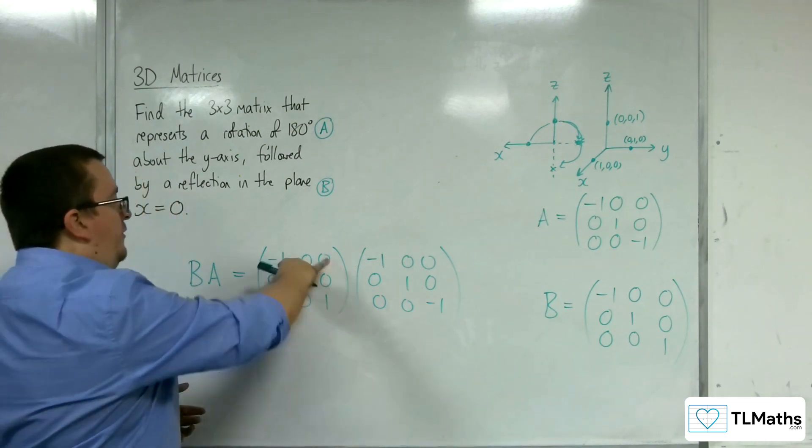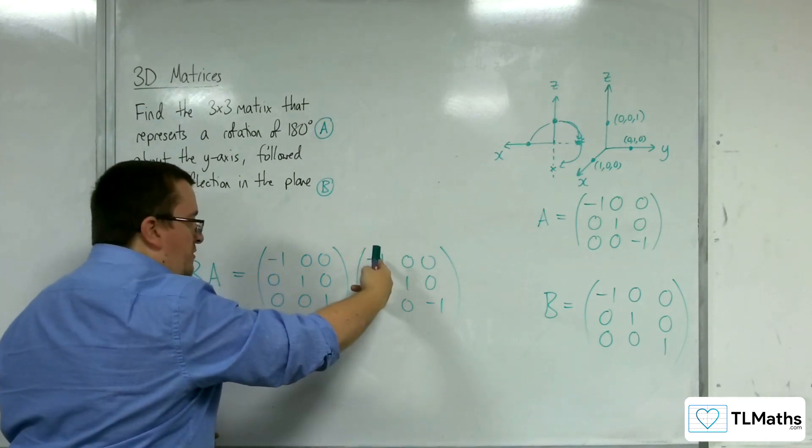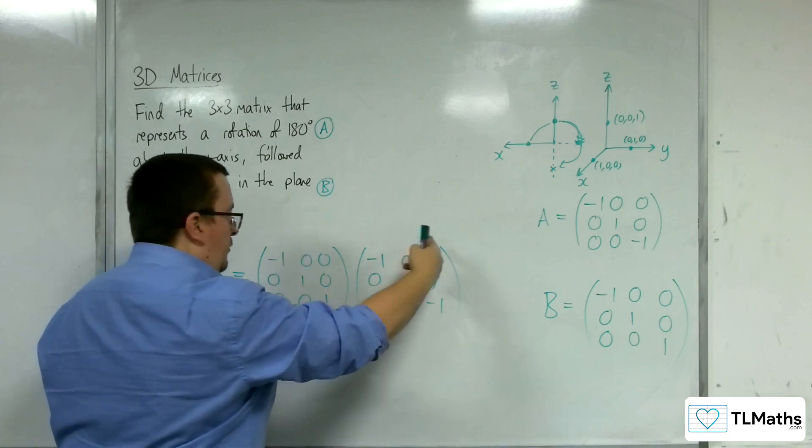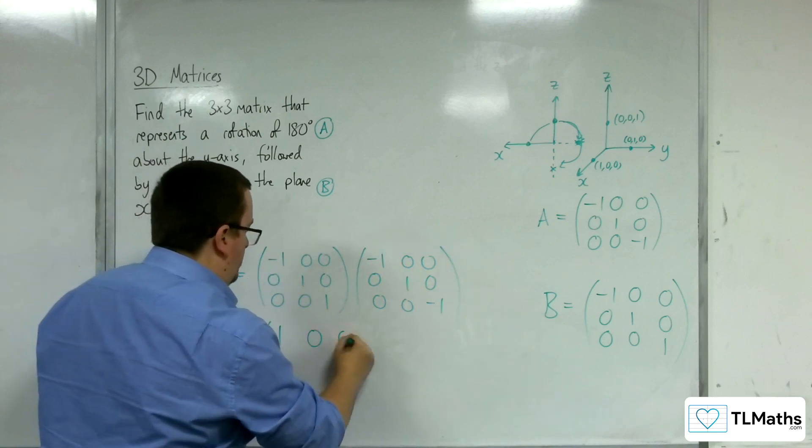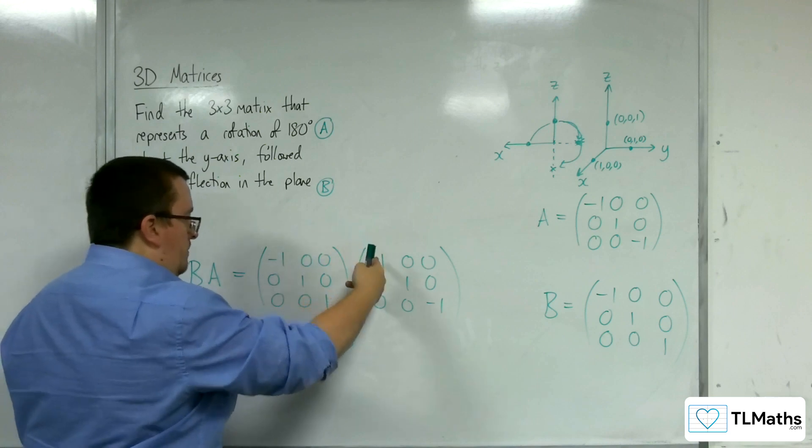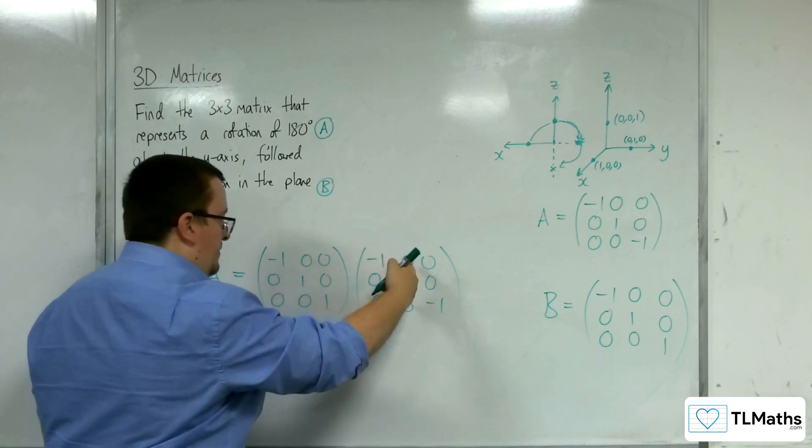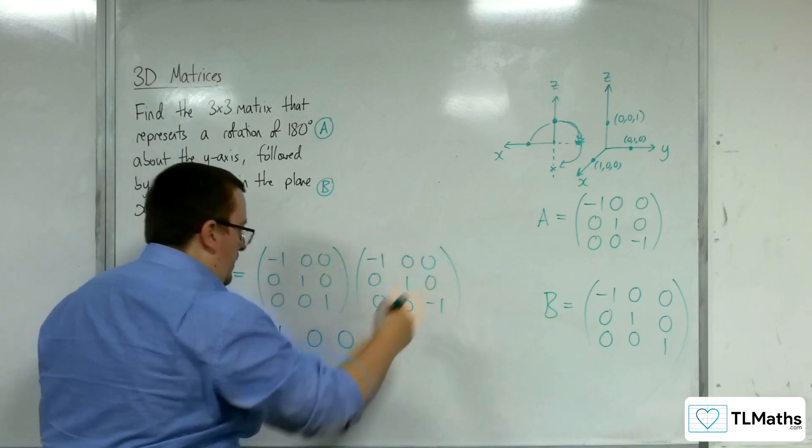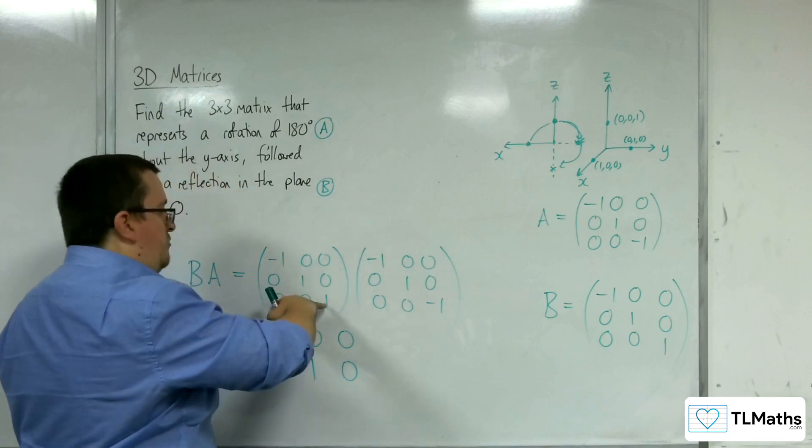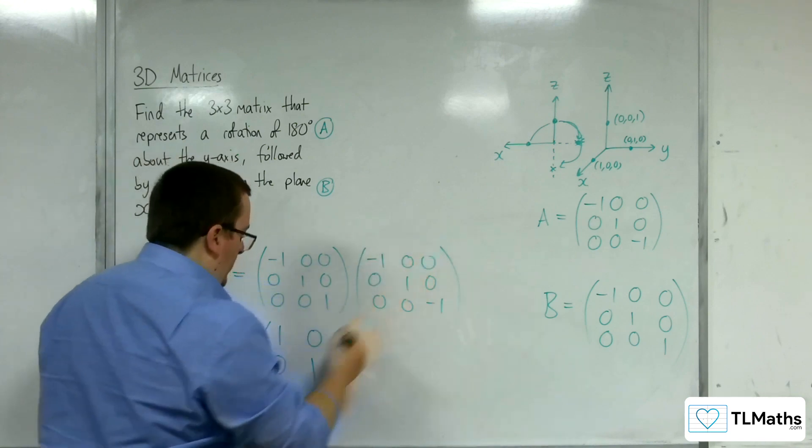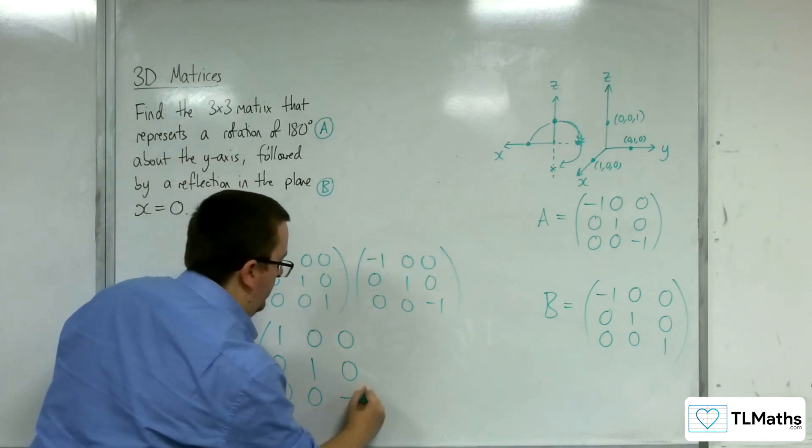So, we've got minus 1, 0, 0 times minus 1, 0, 0, which gets us 1. Then, we've got multiplying each of the other terms gets us 0 and 0. 0, 1, 0 times that one will be 0. Times that one will be 1. Times that one will be 0. And then, 0, 0, 1 multiplied by each of these will get me 0, 0, minus 1.